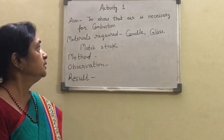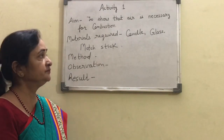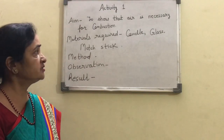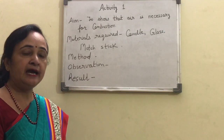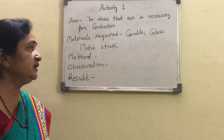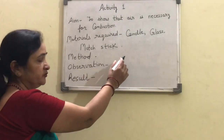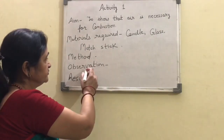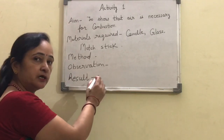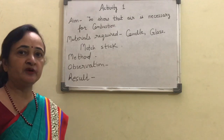In this activity, the materials required are a candle, glass, and a matchstick — these three materials are required. After performing the activity, you have to complete three topics: method, which you complete yourself; observation, what you observed; and then the result.